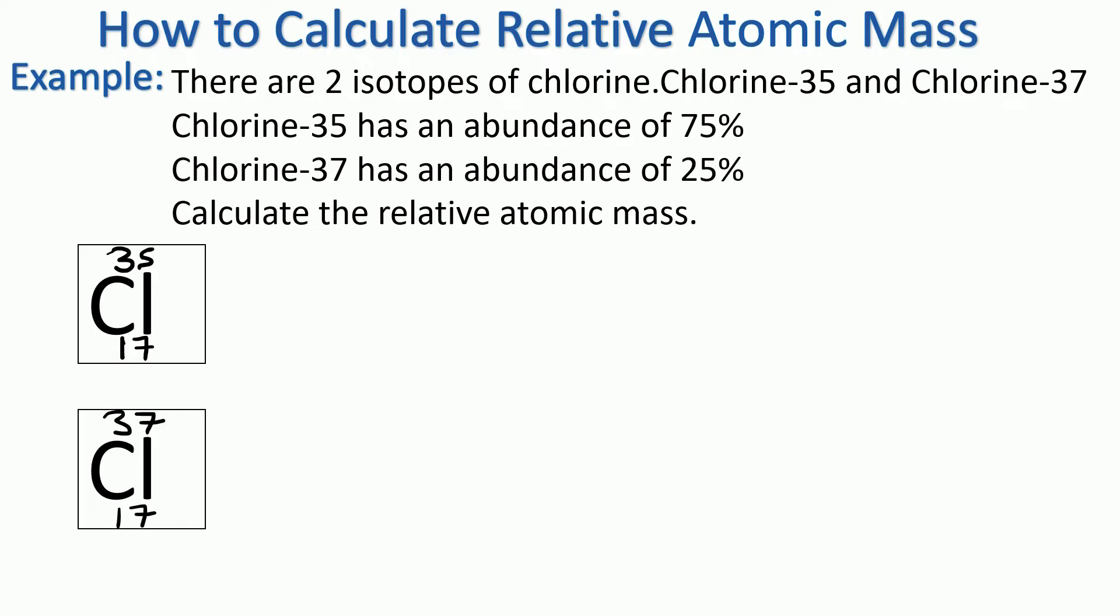And it would also tell you how much of each there is, in other words the abundance. So chlorine-35 has an abundance of 75%, that means if we had a jar of chlorine, 75% of the atoms would be chlorine-35. And chlorine-37 has an abundance of 25%, and we'd be asked to calculate the relative atomic mass.